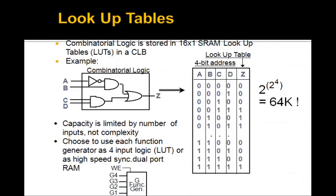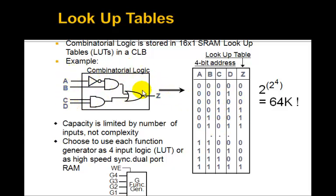So how can a 16 by 1 RAM implement logic functions? It basically just stores the truth table in it. Suppose you have inputs a, b, c, d and output z. This would implement a function like: not-a AND b, OR c AND d, for example.